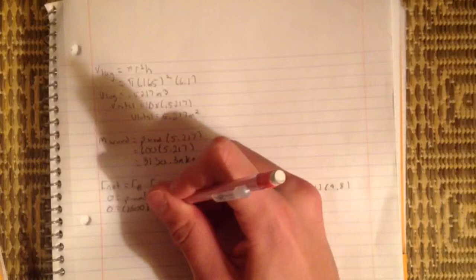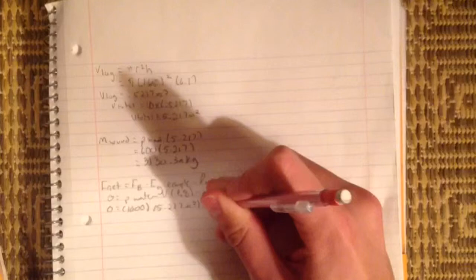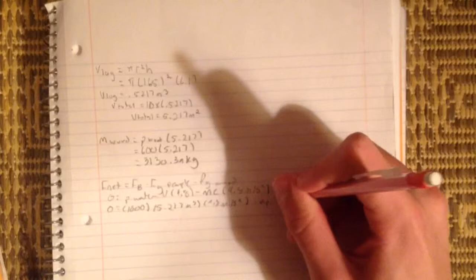In all this is 1000, which is the density of water, times 5.217 meters cubed, which is the volume of the logs, times 9.8, minus the mass of the people times 9.8, minus the mass of the wood times 9.8.